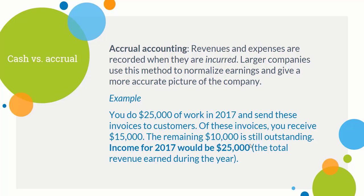Under accrual accounting, because you have already earned that money, you can count it as revenue. The $10,000 still outstanding goes into accounts receivable, but you can record the full $25,000 on your income statement — and that's totally acceptable. This concept also applies to expenses, not just revenues. You can accrue expenses as they are incurred.